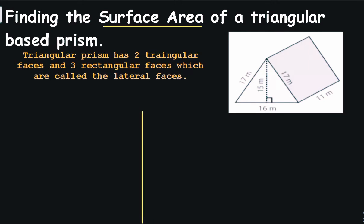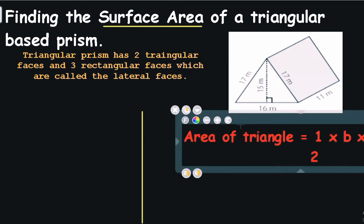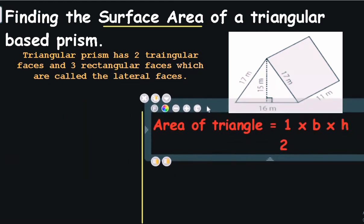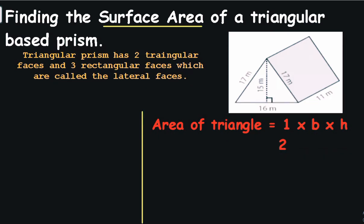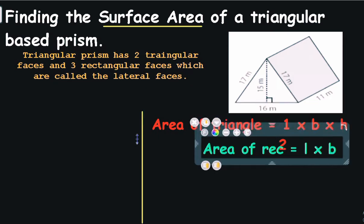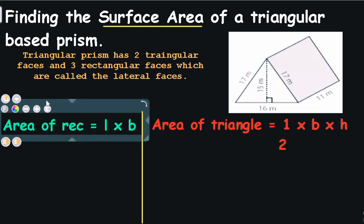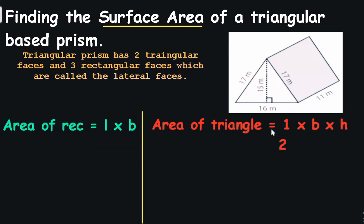Let's write the formulas. The formula for finding the area of a triangle is half multiply by base multiply by perpendicular height. And the formula for finding the area of a rectangle is length multiply by breadth.